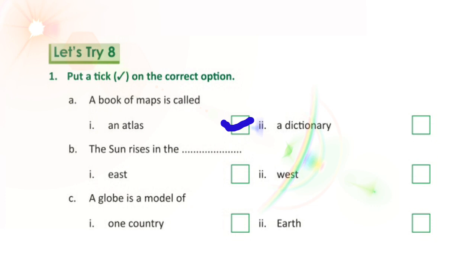Next: the sun rises in the — first, east, or second, west. The answer is east.